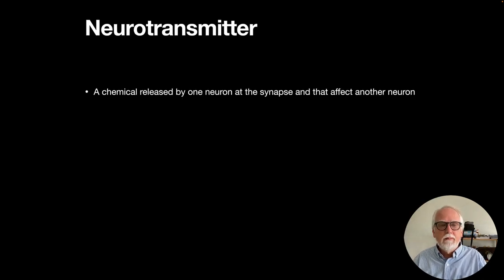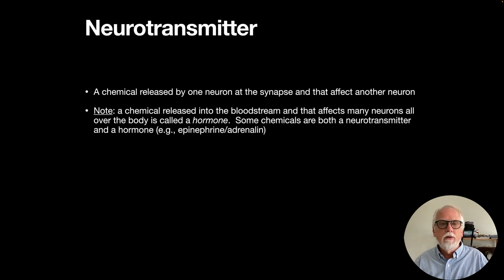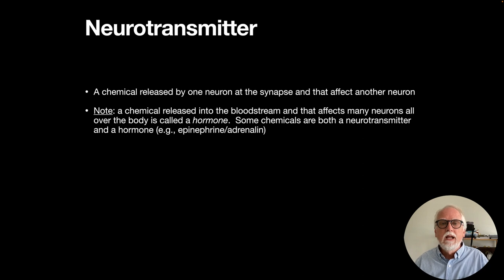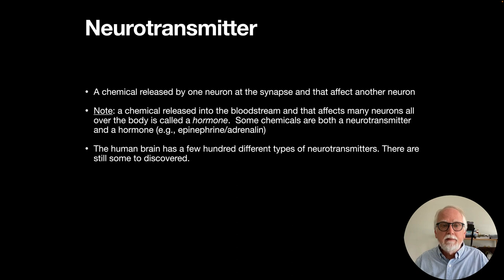A neurotransmitter is a chemical released by one neuron at the synapse that affects another neuron. Note that a chemical released into the bloodstream that affects many neurons all over the body is called a hormone — which is why we'll be covering the endocrine system. Some chemicals are both neurotransmitters and hormones; for example, epinephrine, also known as adrenaline, is both.